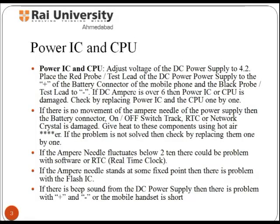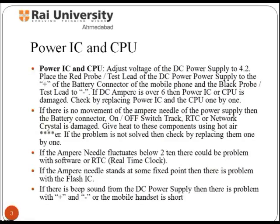To test the power IC and CPU, first adjust the voltage of the DC power supply to 4.2. Place the red probe to the positive of the battery connector of the mobile phone and the black probe to the negative. If DC power is over 6, it means the CPU is damaged. Check by replacing the power IC and CPU one by one. If there is no movement on the amp needle of the power supply, then the battery connector, on/off switch track, RTC, or network crystal is damaged. Apply heat to the component using a hot air gun. If the problem is not solved, check by replacing them one by one.